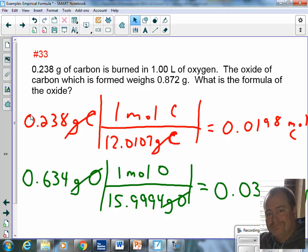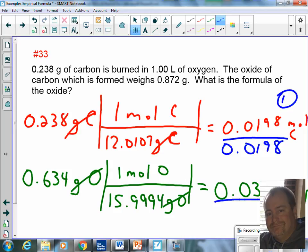So my next step is divide by the smallest number. Now what if I would have four different elements? I would divide the smallest number by all of them, right? So I'm going to divide the smallest number, which is 0.0198 - it's going to give me one there. And this gives me 1.99997, so that's going to give me two. So what's my empirical formula? CO2.